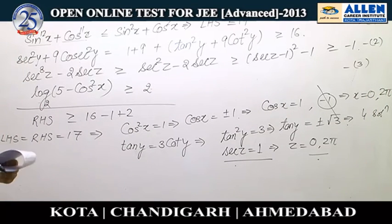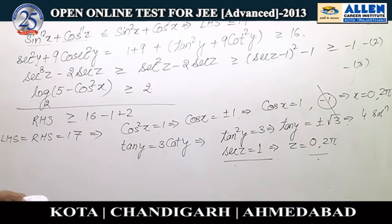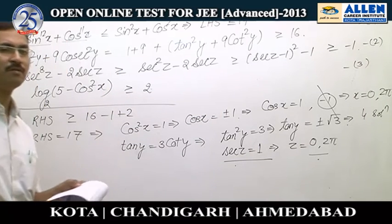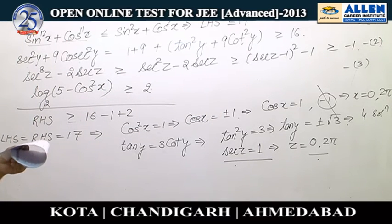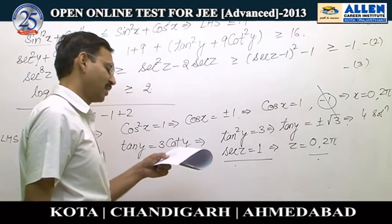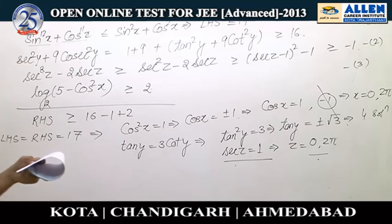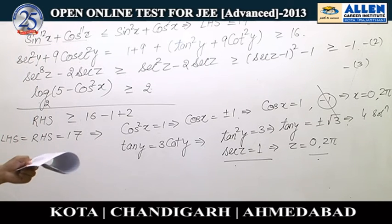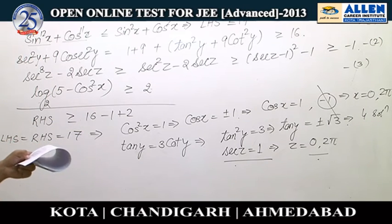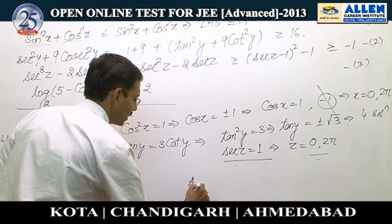Looking at the options: option A states the number of possible values of x is 2 — correct. Option B asks for ordered pairs (x, y): x has 2 values and y has 4, so 8 ordered pairs — correct. Option C asks for ordered pairs (y, z): y has 4 values, z has 2, giving 8 pairs — correct. Option D asks for ordered triplets (x, y, z): 2 × 4 × 2 = 16 by the fundamental principle of counting. So all four options A, B, C, D are correct.